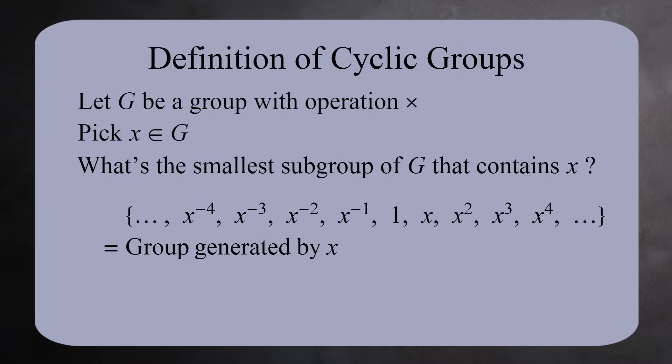This set of all integral powers of X is the smallest subgroup of G containing X. We call it the group generated by X, and denote it using brackets. If G contains an element X such that G equals the group generated by X, then we say G is a cyclic group.